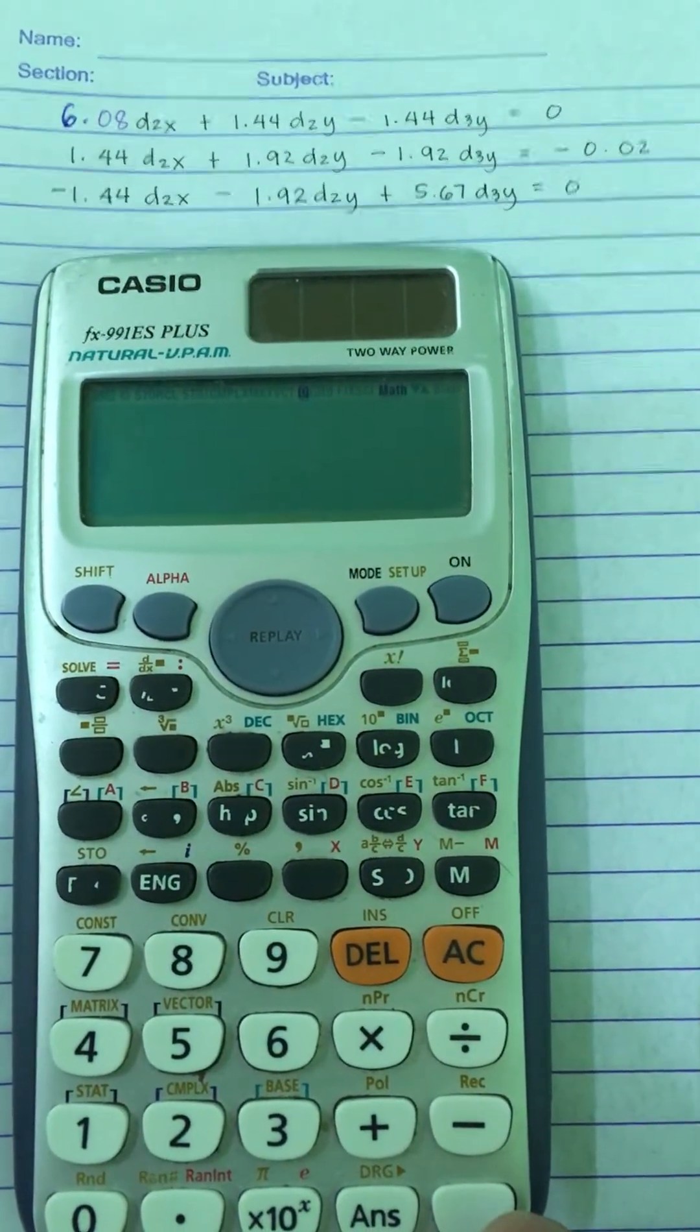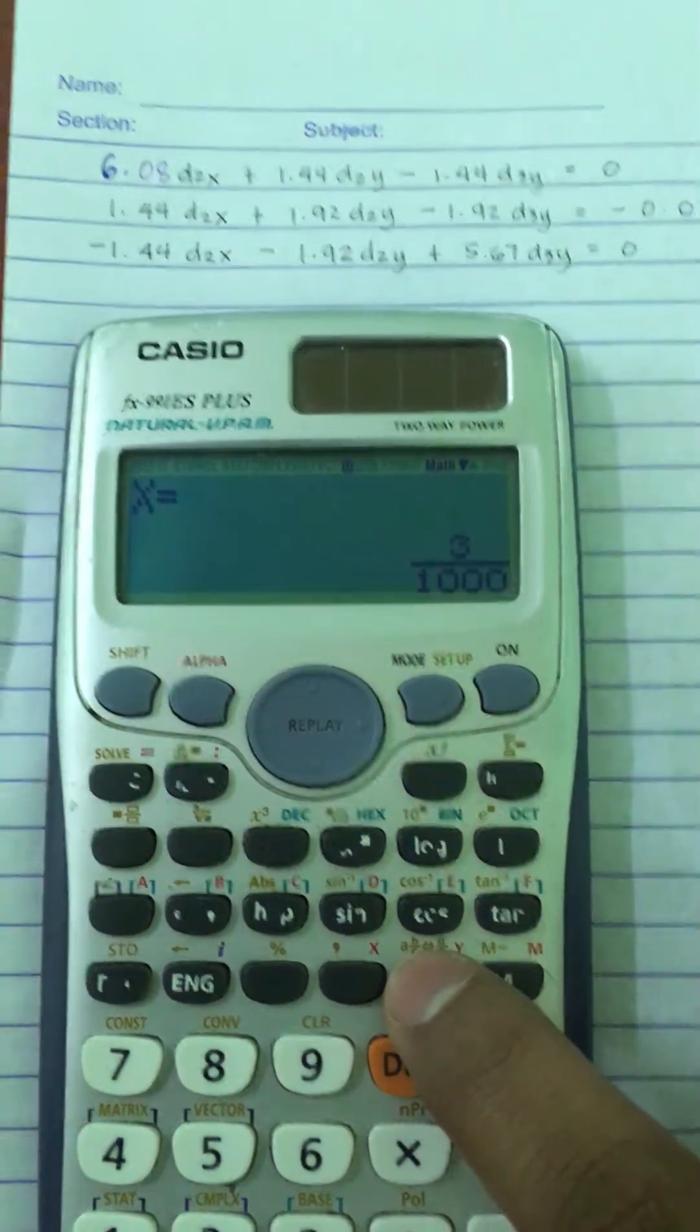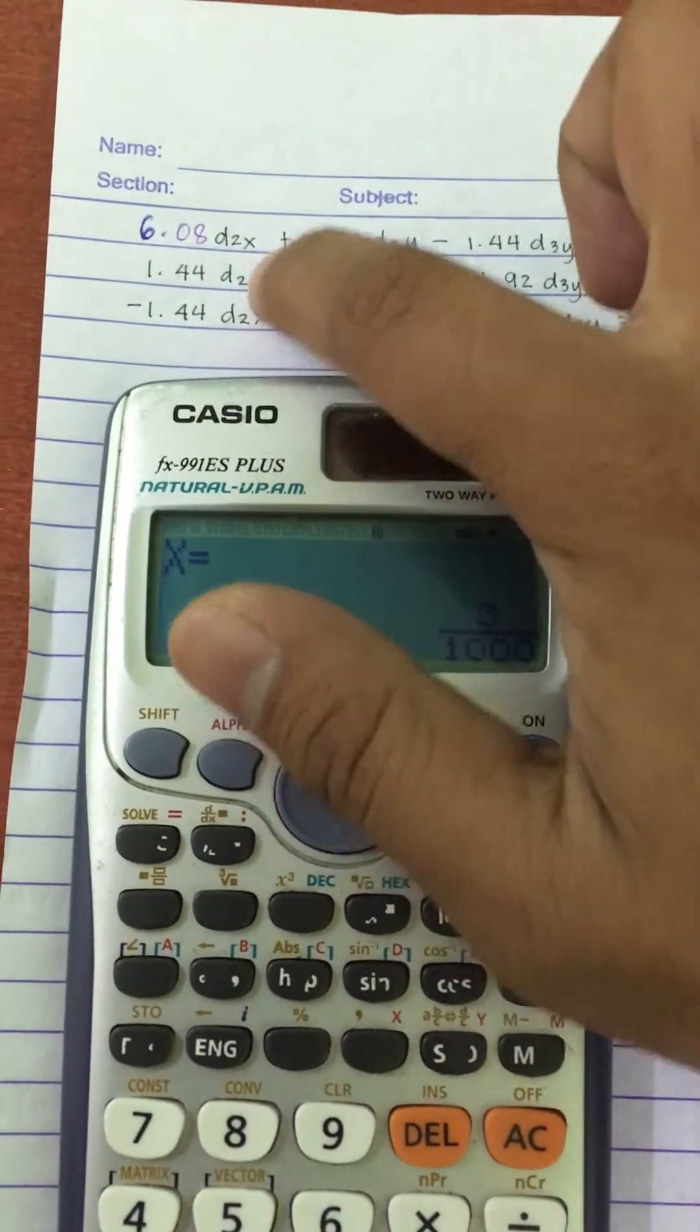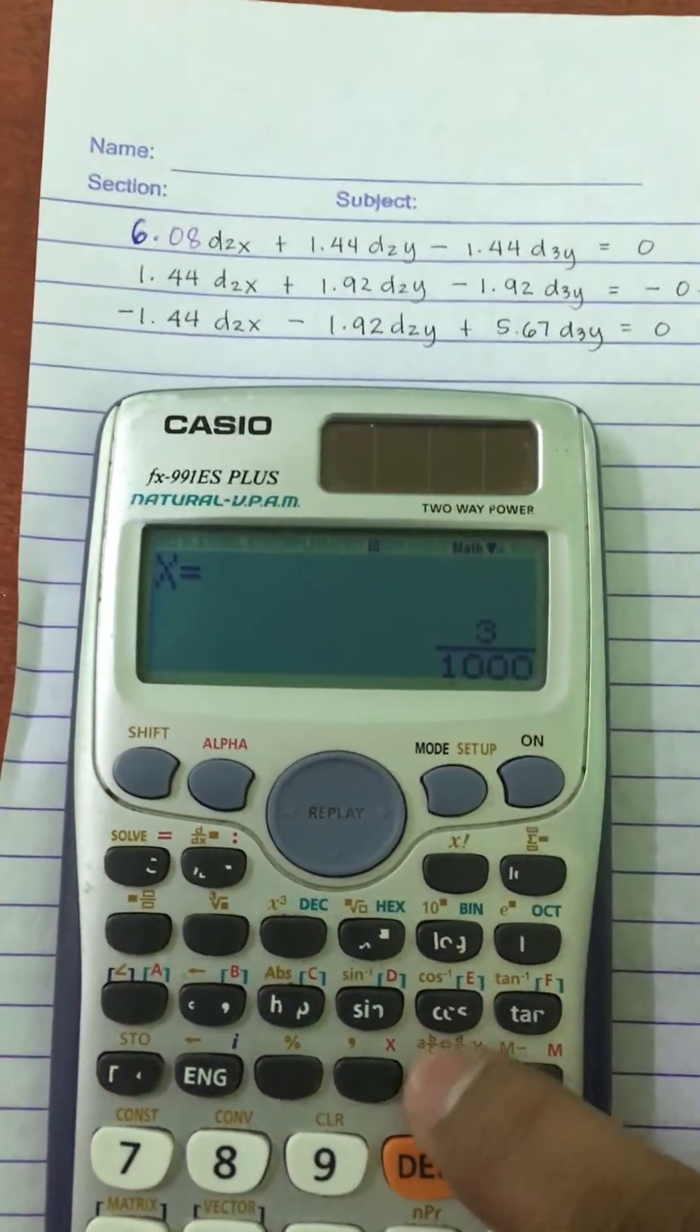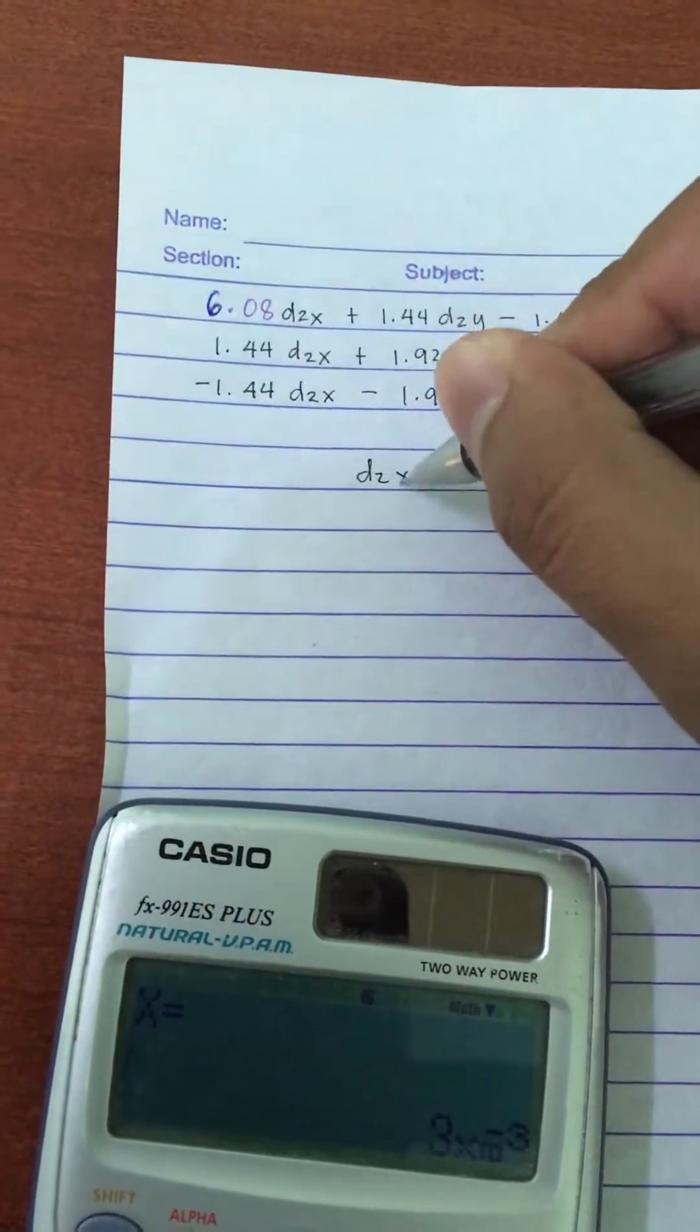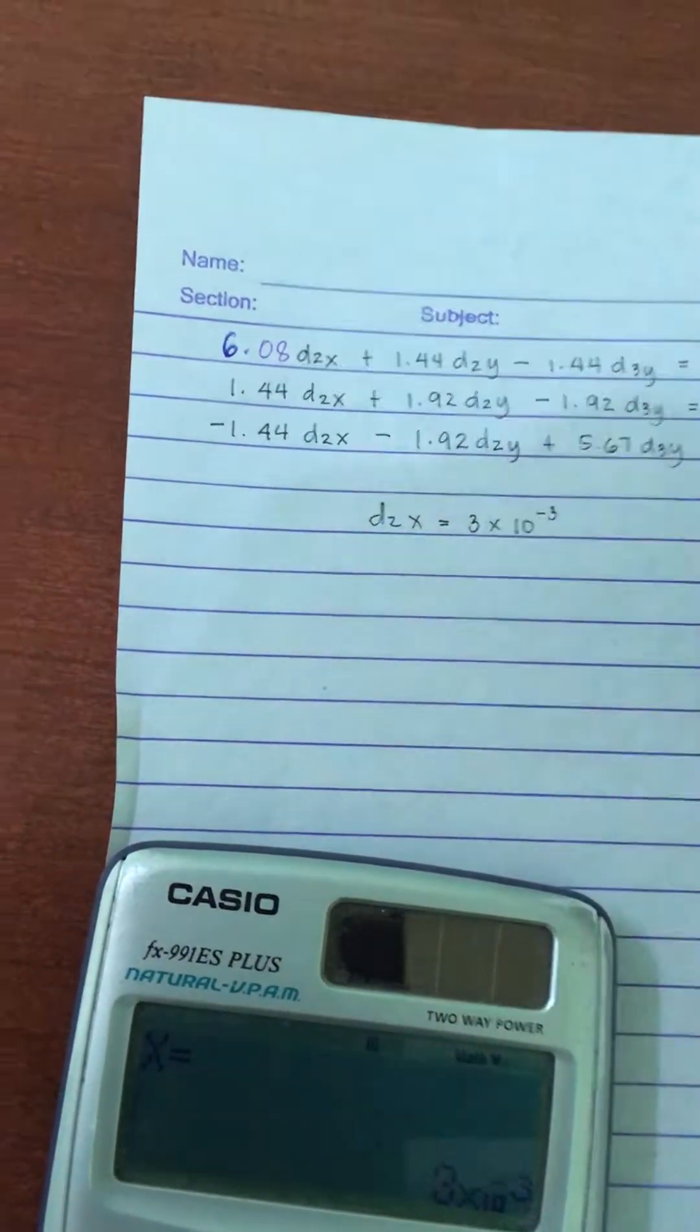And then the values for the unknowns will come up. For the first unknown, we have a variable x here, but x actually means the first unknown that is written here. So this is the value of D2x. D2x is 3 times 10 raised to negative 3. D2x is equal to 3 times 10 raised to negative 3.